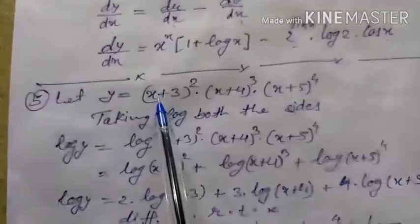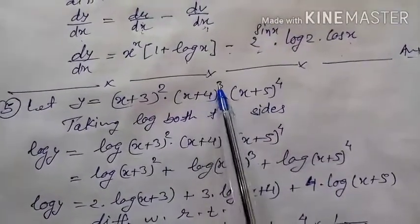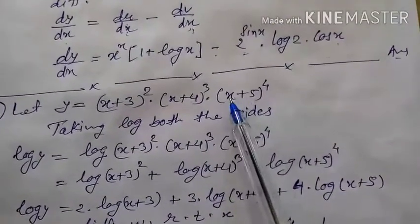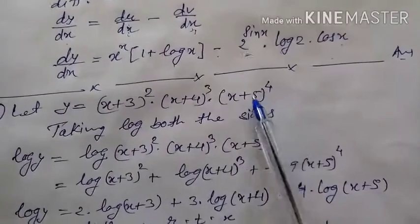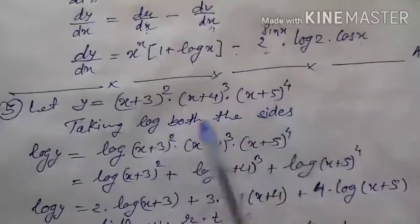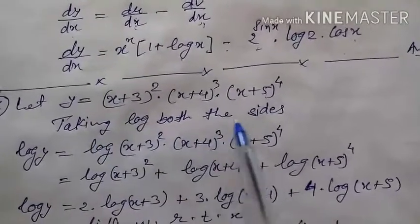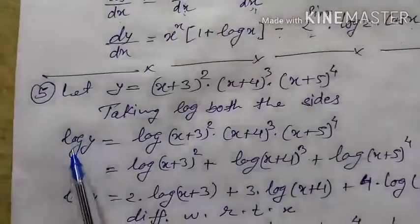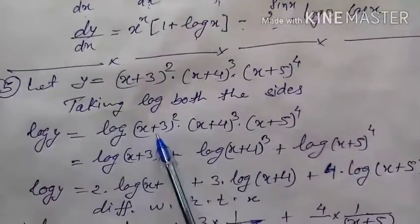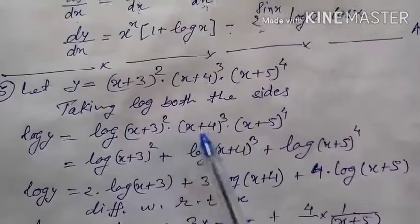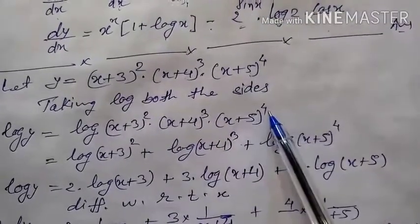y = (x+3)² · (x+4)³ · (x+5)⁴. It is only a single term, so in this question you directly take log of both sides. Left side: log y, and right side: log[(x+3)² · (x+4)³ · (x+5)⁴].